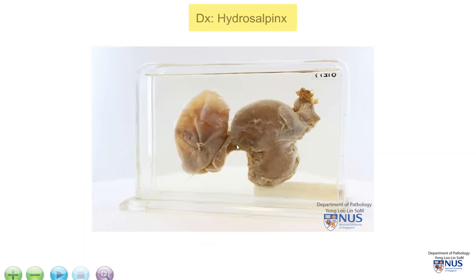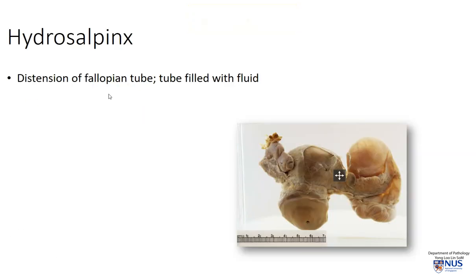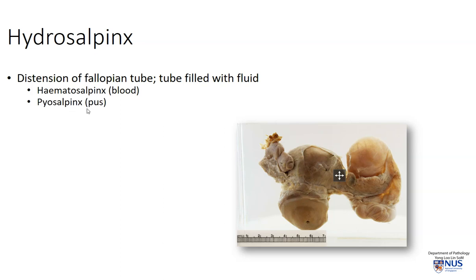The diagnosis here is hydrosalpinx. Hydrosalpinx is a state where there is distention of the fallopian tube which is often filled with fluid. The fluid is usually clear or serous, and if the tube is actually dilated and filled with blood this is called hematosalpinx, or if it is filled with pus or purulent material it is called pyosalpinx.